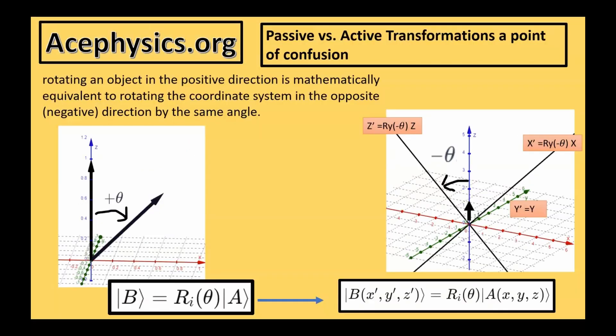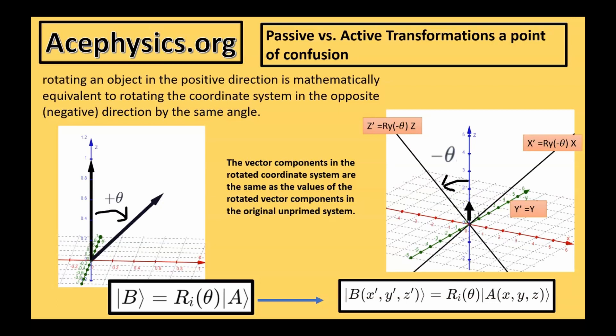A brief discussion on active versus passive transformation. In the picture on the left, there is a vector A with a magnitude of 1 pointing straight up in the z direction. If I rotate by some angle theta, I produce a new vector B with different components along the x, y, and z-axis. On the right is the same vector A, but this time we rotate the coordinate system instead of the vector itself. The vector components in the rotated coordinate system are the same as the values of the rotated vector components in the original unprimed system.